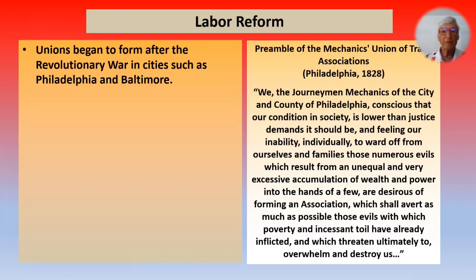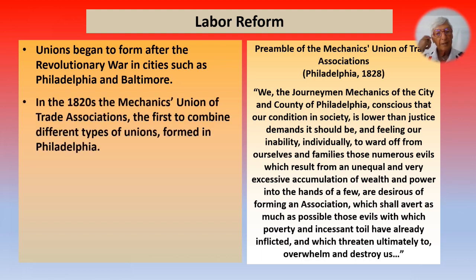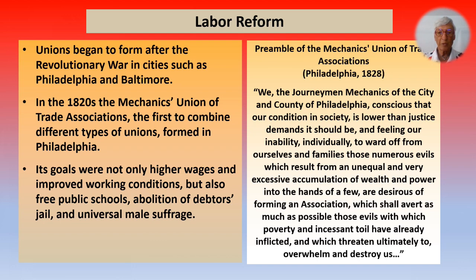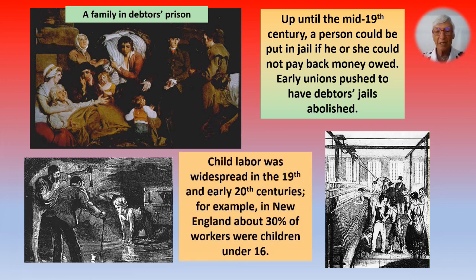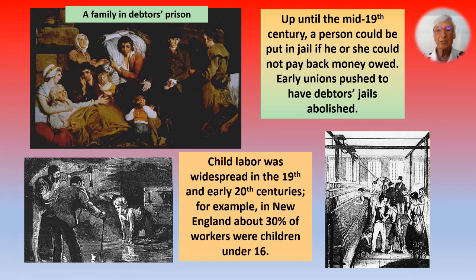Unions began to form after the Revolutionary War in cities such as Philadelphia and Baltimore. In the 1820s, the Mechanics Union of Trade Associations — the first to combine different types of unions — formed in Philadelphia. Its goals were not only higher wages and improved working conditions, but also free public schools, abolition of debtors' jail, and universal male suffrage. The union entered politics to secure its goals. Up until the mid-19th century, a person could be put in jail for not paying back money owed — if thrown in debtors' prison, you couldn't work to pay off your debt to get out, placing you in an impossible situation. In New England, about 30% of workers were children under 16. Debtors' prisons have, of course, since been abolished.